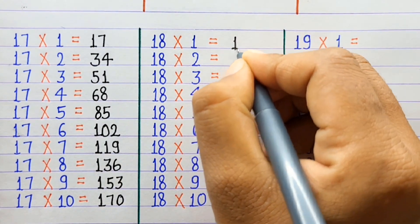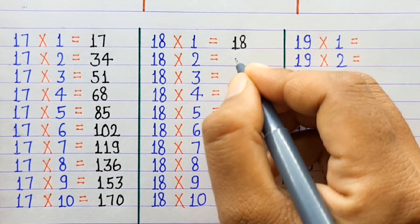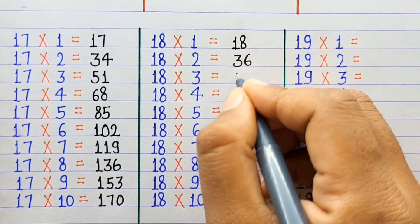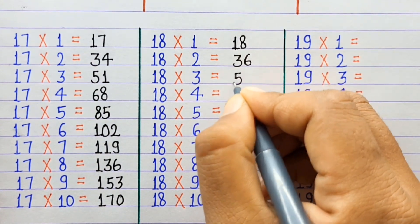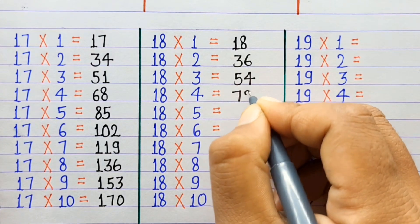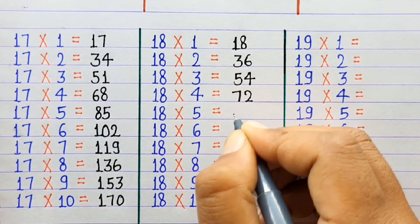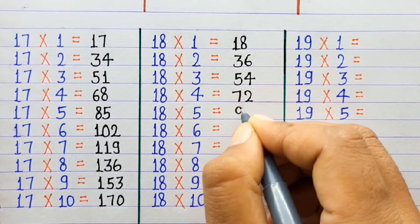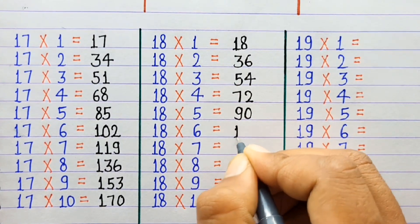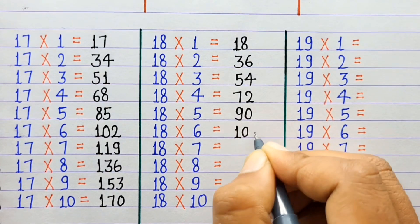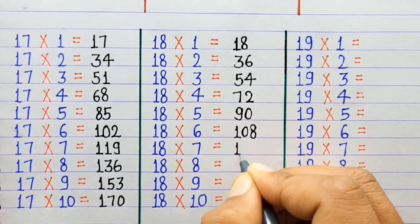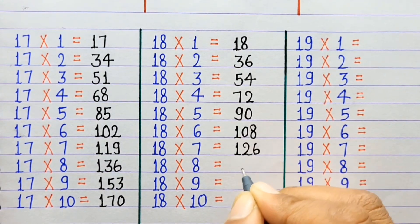18×1=18, 18×2=36, 18×3=54, 18×4=72, 18×5=90, 18×6=108, 18×7=126.